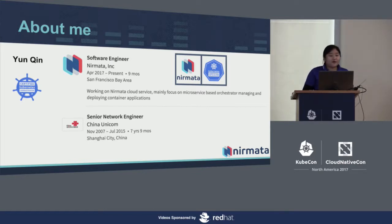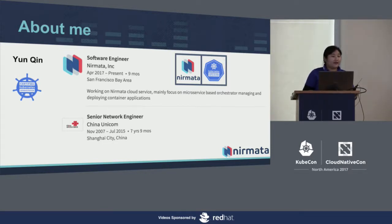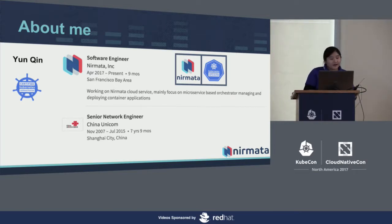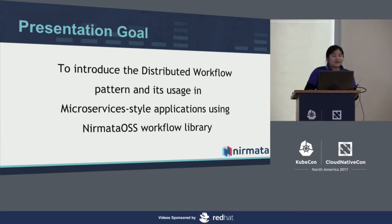Before we start, I'm going to say something about myself. My name is Rien Ching, and I was a former network engineer and now work as a software engineer at Nemada, a company that delivers integrated solutions on multi-cloud application management as well as Kubernetes-based container management. Nemada is also a Kubernetes certified service provider.